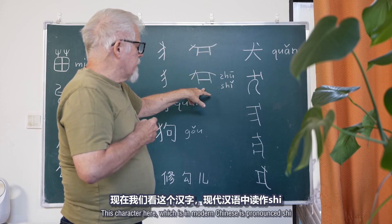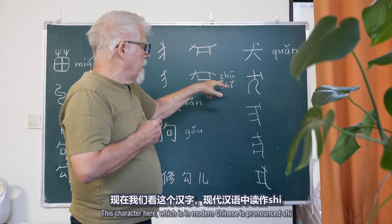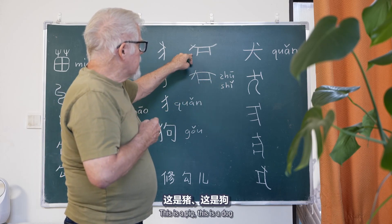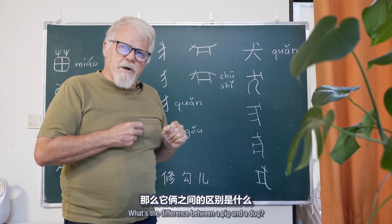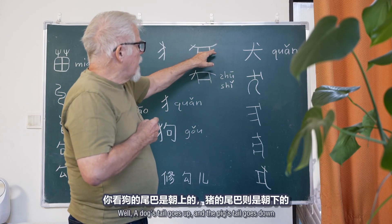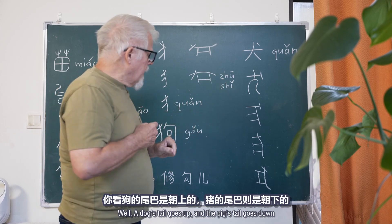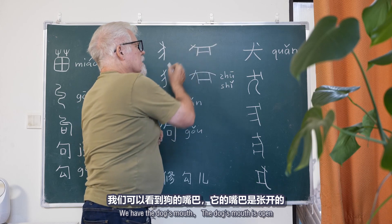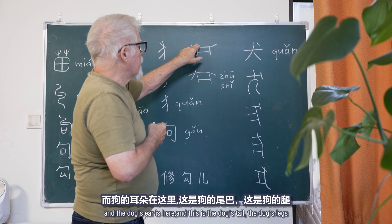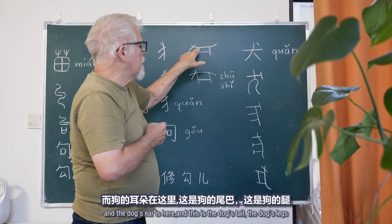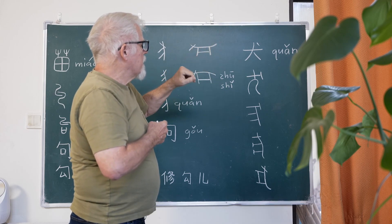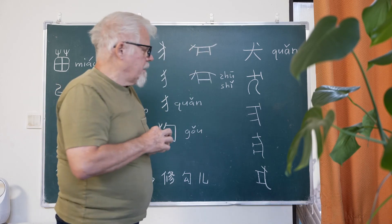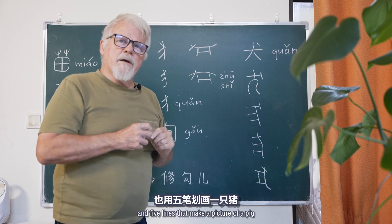Now, this character here in modern Chinese is pronounced shǐ, but we usually call it jiù. It's a pig. This is a pig. This is a dog. What's the difference between a pig and a dog? Well, a dog's tail goes up, and a pig's tail goes down. But let's look at this dog — we have the dog's mouth, the dog's ear, the dog's tail, the dog's legs. So we have five lines that make a picture of a dog, and five lines that make a picture of a pig.